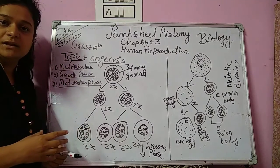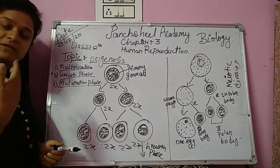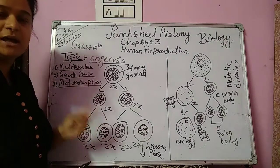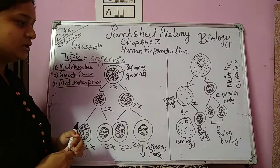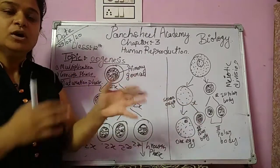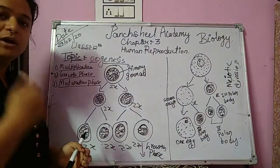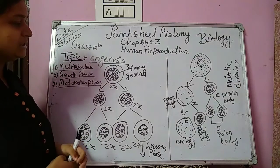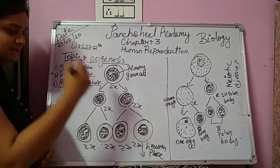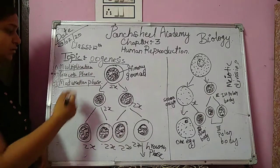The remaining cells, due to lack of nutrition, are converted into polar bodies — first polar body, second polar body, and third polar body — and are destroyed. So in a female, only one egg is formed at a time. Unlike in males during spermatogenesis where all cells divide to produce sperm, in females only one egg is formed per cycle; the remaining cells convert into polar bodies and are destroyed.